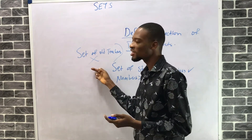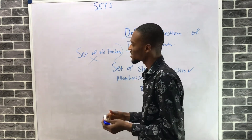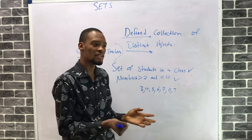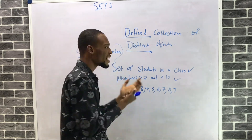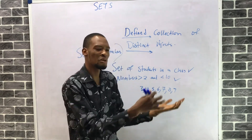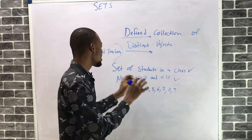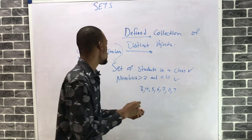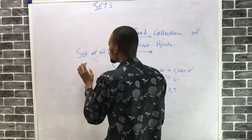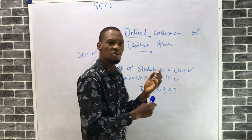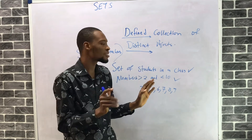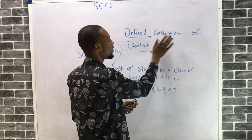Likewise, 'a set of best footballers in a class' is not defined because some persons can argue that a particular person cannot play football well. There is argument, so it's not defined. But if I say 'set of teachers in the school above 50 years,' this is defined — nobody can argue about it.